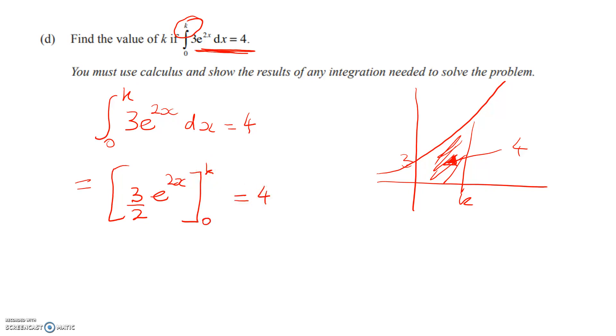That equals 4. So continuing with the substitution, we get 3 over 2e to the 2k minus 3 over 2e to the power of 0 is equal to 4. So 3 over 2e to the power of 2k is equal to, well, this is just 1. So 4 plus 3 over 2 gives me 11 over 2. We can multiply through. Remember, we're trying to solve for k. And we get e to the power of 2k is equal to 11 over 3.